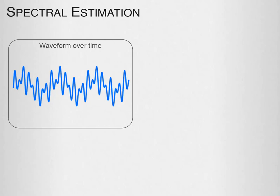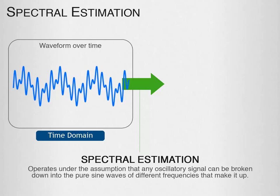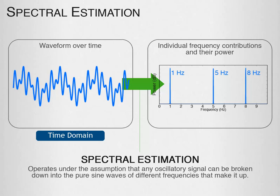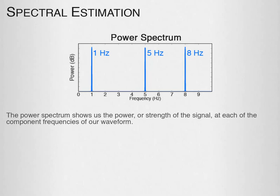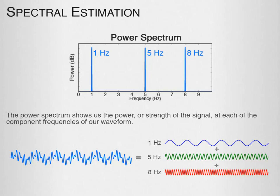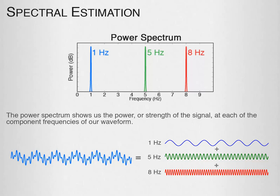We commonly see the EEG signal as a waveform — any signal represented as a waveform over time is said to be in the time domain. Spectral estimation operates under the assumption that any oscillatory signal can be broken down into the pure sine waves of different frequencies that make it up, allowing us to view the signal in the frequency domain. This plot is called the power spectrum, showing the power or strength of the signal at each component frequency, with frequency on the x-axis and power on the y-axis. For a signal composed of three sinusoids of equal amplitude, we see three spikes of equal height at 1, 5, and 8 Hz.